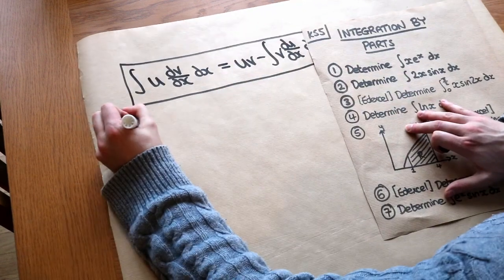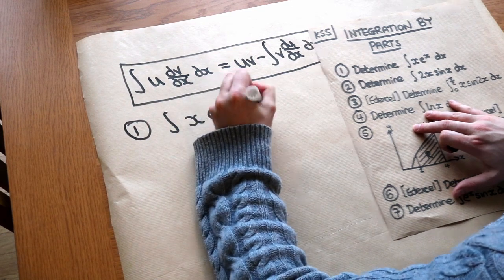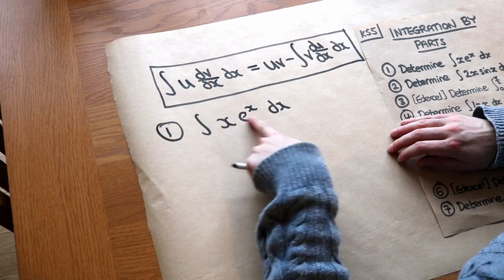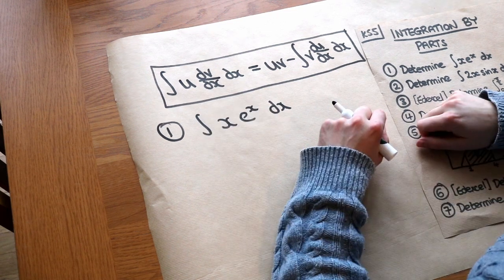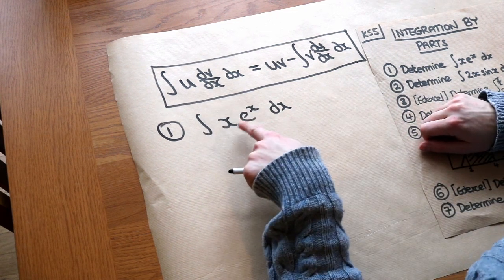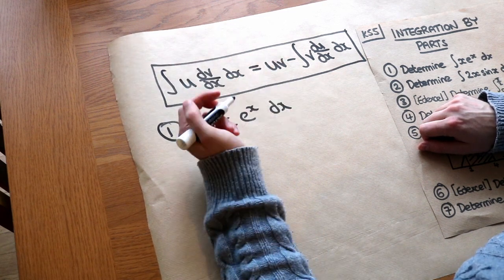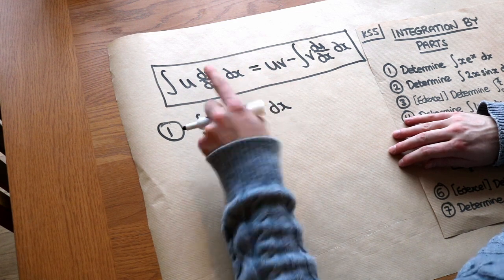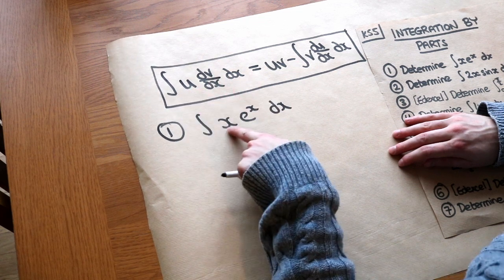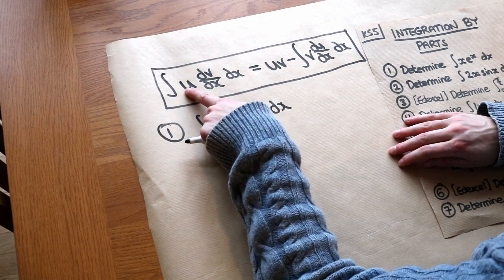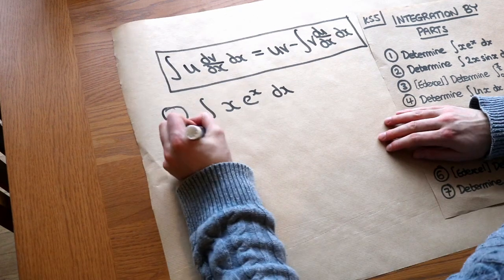Let's look at this particular example: integrating x·eˣ dx. We choose one of these two things to be u and the other to be dv/dx. In general, whenever you have an x or x² term, you choose that to be the u and the other to be the dv/dx. Part of the motivation is that we want to choose the thing for u that becomes simpler when we differentiate it. If we make x the thing we differentiate, x differentiates to 1, which is simpler.